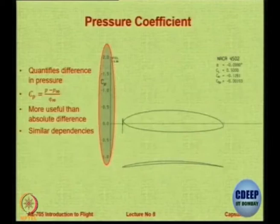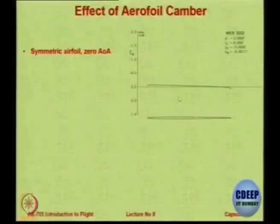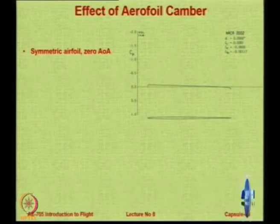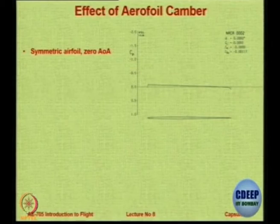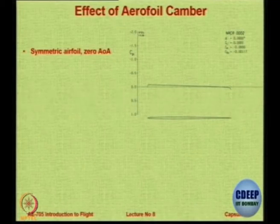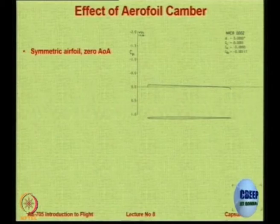This graph is interesting: if there is net area between the two Cp curves, there is lift; you can see CL is 0.5 here. For a symmetric airfoil at zero angle of attack, you should theoretically have zero lift. There may be a very small non-zero value — around 0.0001 — but that is due to numerical error in calculations.